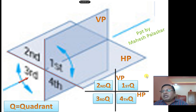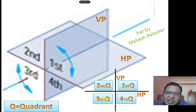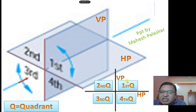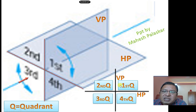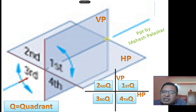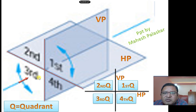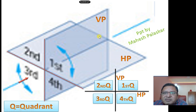Now we can use two methods of projection: the first angle method of projection and the third angle method of projection. As per our syllabus, we are mostly going to use the first angle method. In the first angle method, the object is assumed to be lying in the first quadrant — that means above HP and in front of VP.